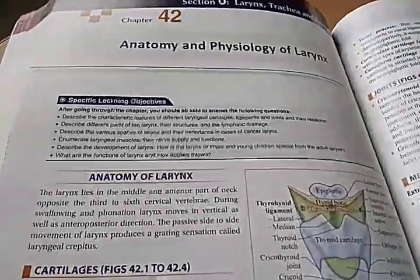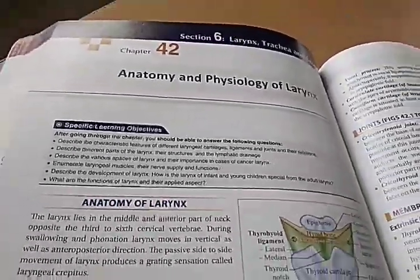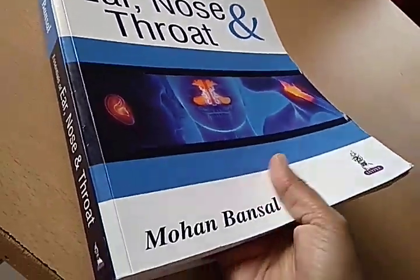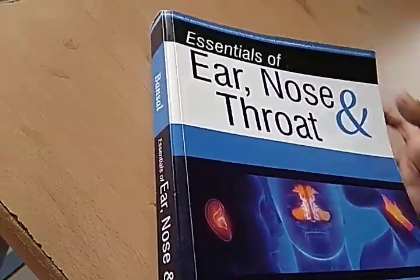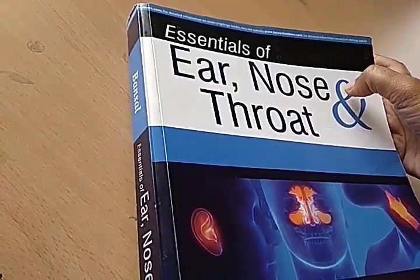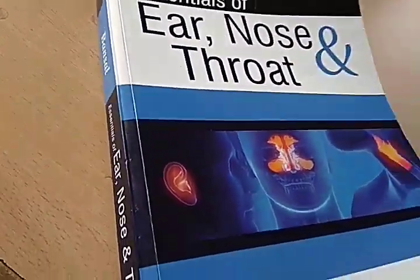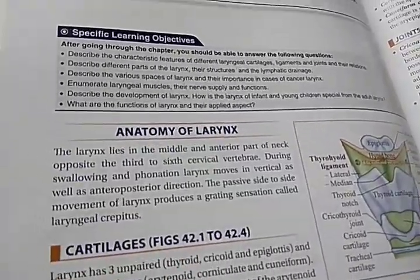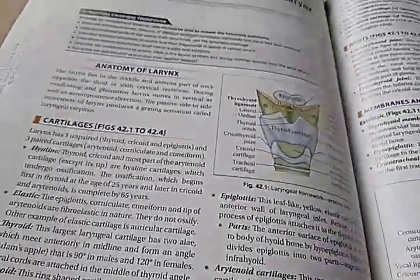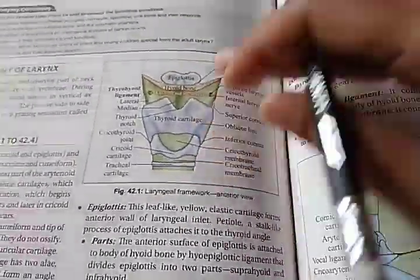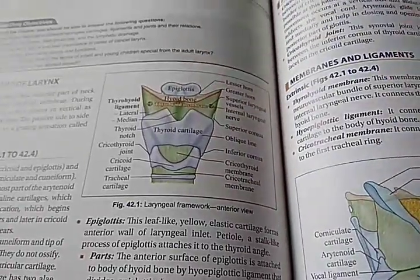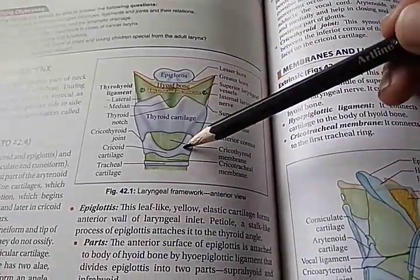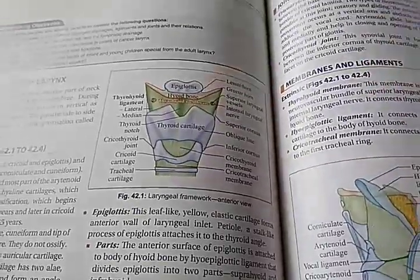The last topic is the larynx. We've covered ear, nose, pharynx and esophagus, and now we come to the larynx. Here they are talking about the cartilages of the larynx — the epiglottis, thyroid cartilage, and cricoid cartilage, which you can see from the front. From behind you will have the arytenoid cartilage, the corniculate cartilage, and the cuneiform.